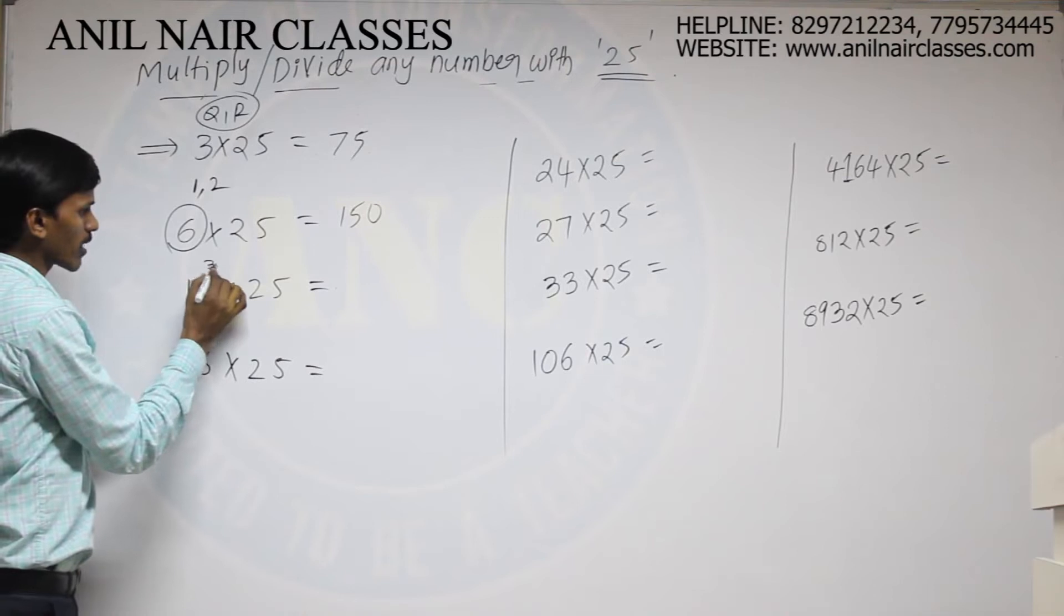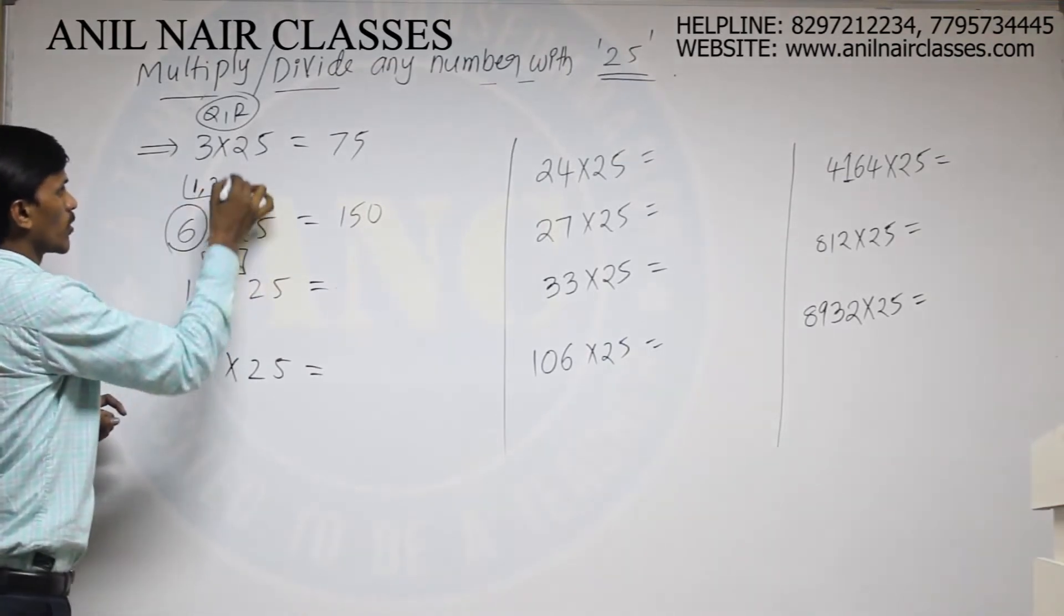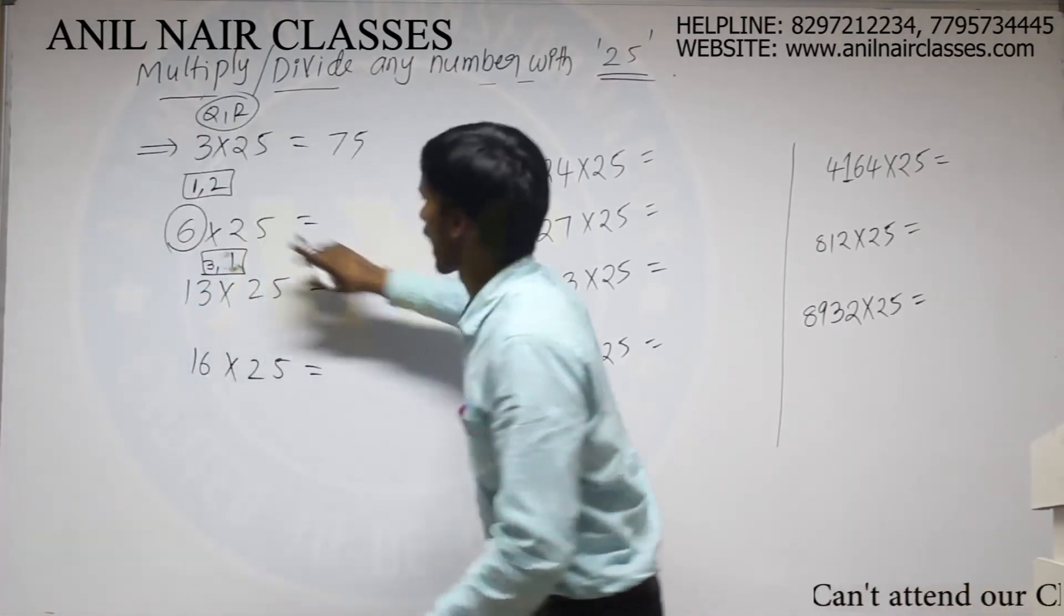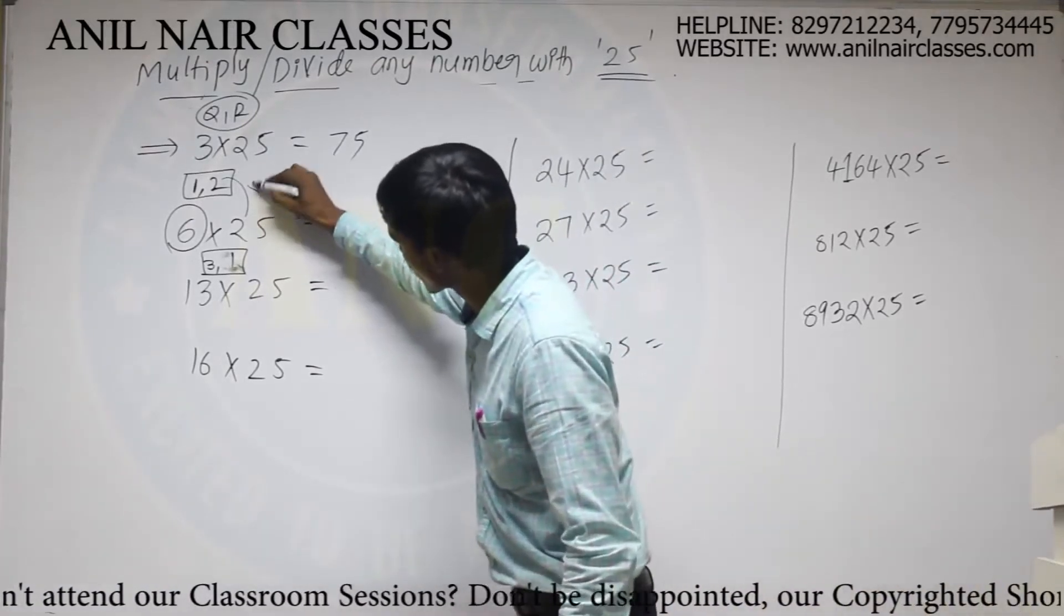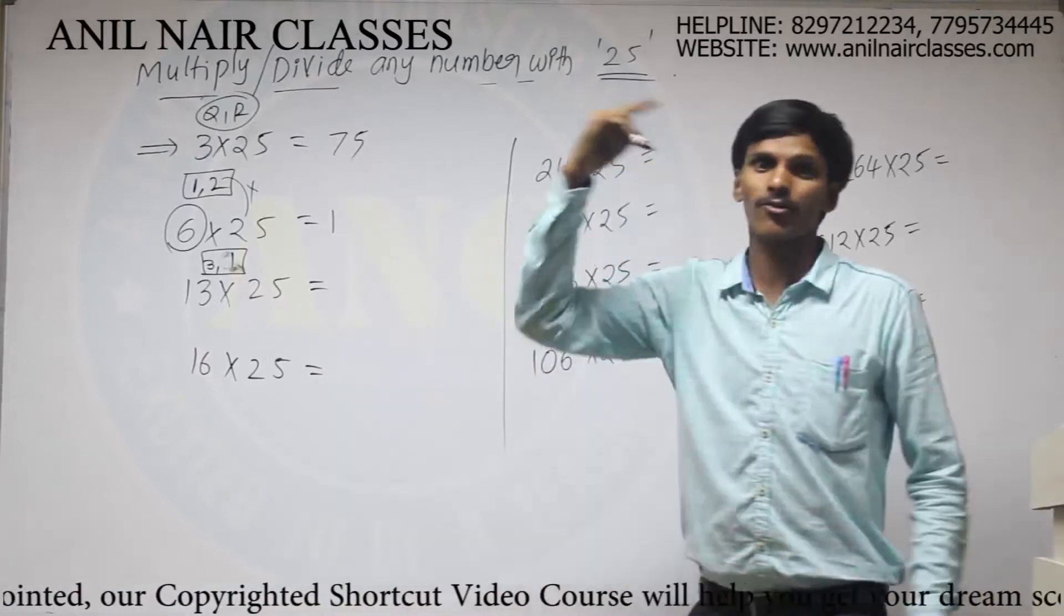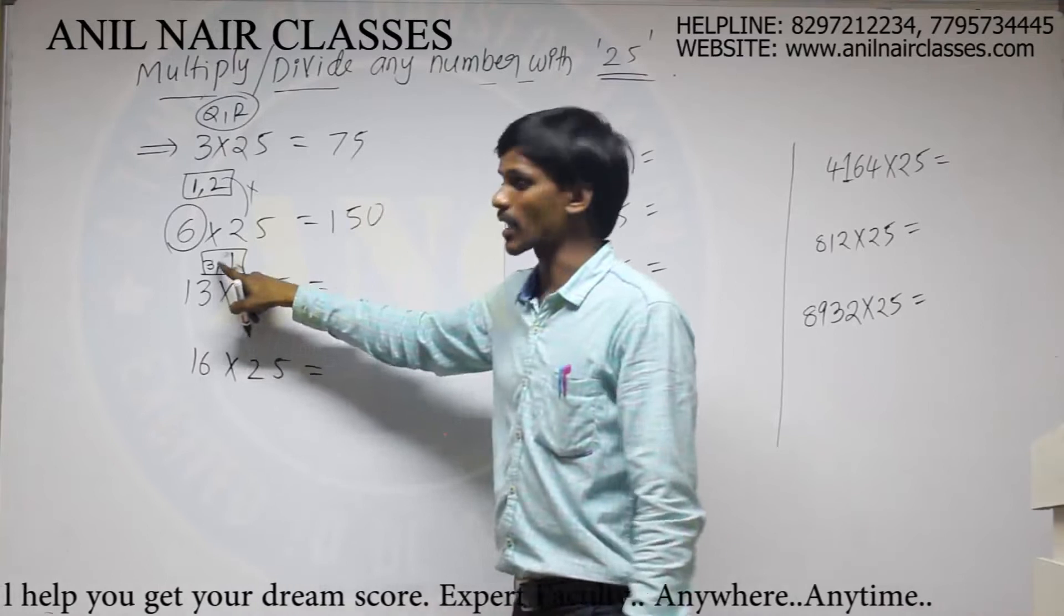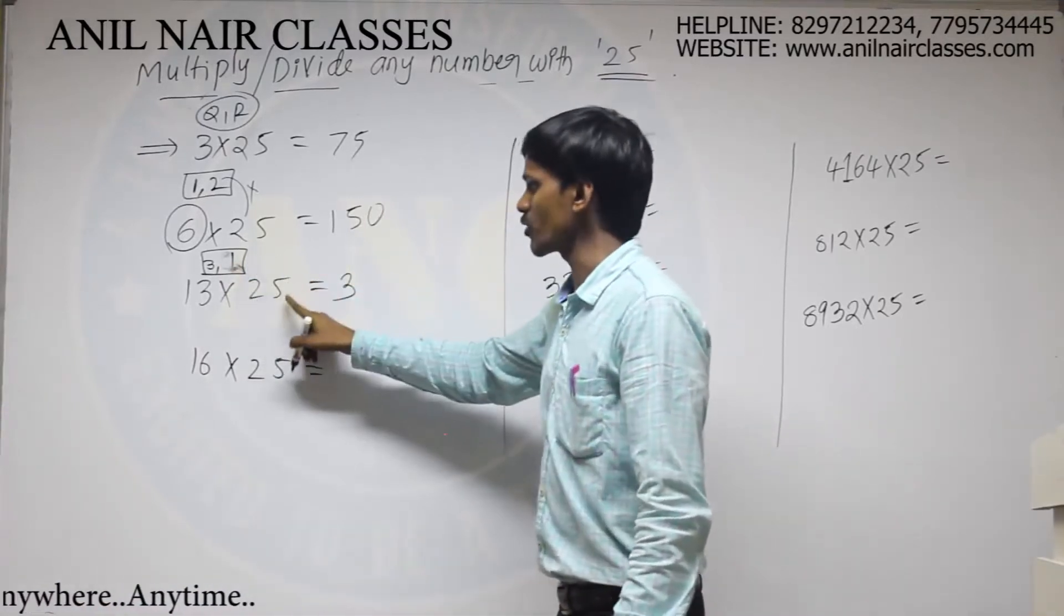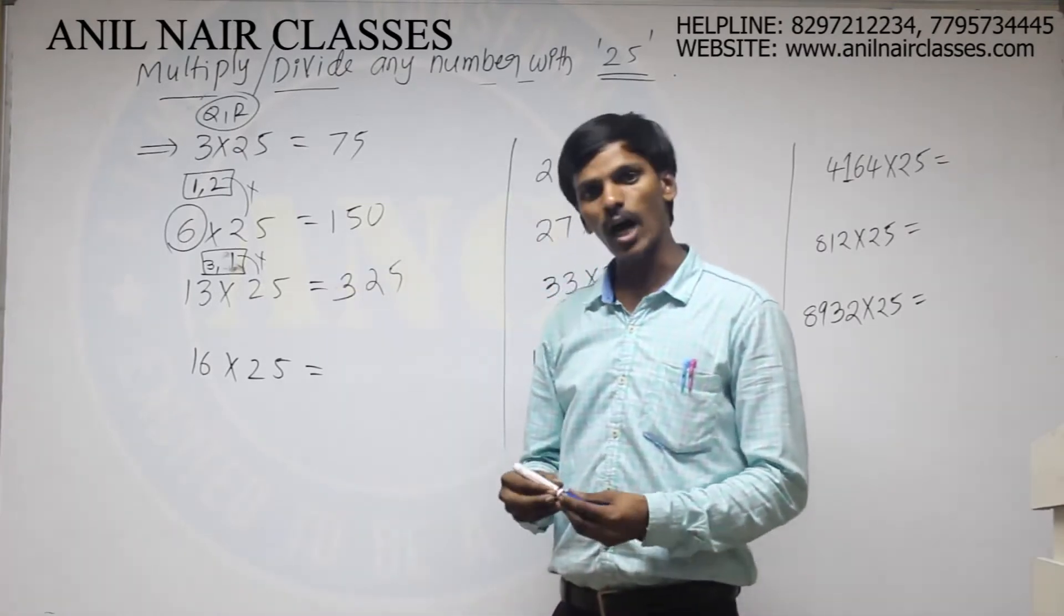And similarly here, 4×3 are 12. Remainder will be 1. Coefficient, remainder. Now, write the coefficient directly. What is the coefficient? 1. And multiply the remainder with 25. Similar to the multiplication number with 5. So, 25×2 are 150. Similarly, write the coefficient as it is and multiply the remainder with 25. 25×1 are, it will be 25.